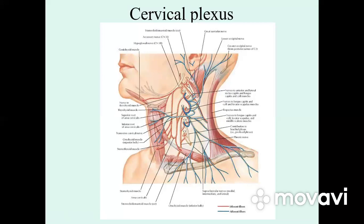The muscular fibers have another name: muscular branches. These are branches to the musculi recti capitis anterior and lateralis, musculi longus capitis and colli, musculi scaleni, musculi levator scapulae, and finally to musculi intertransversarii anteriores.